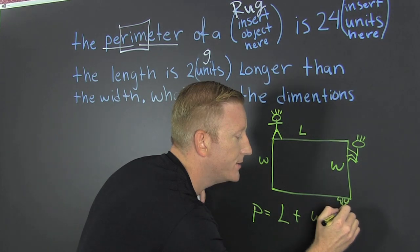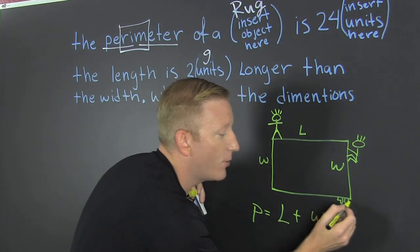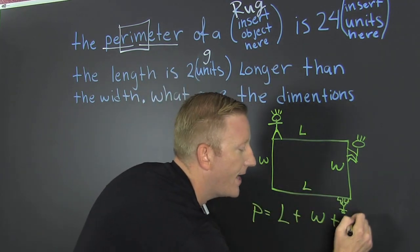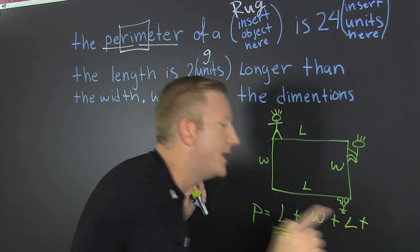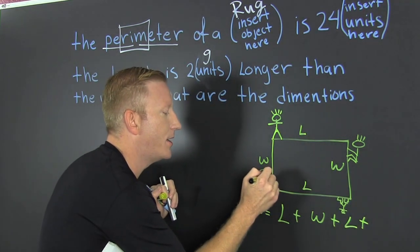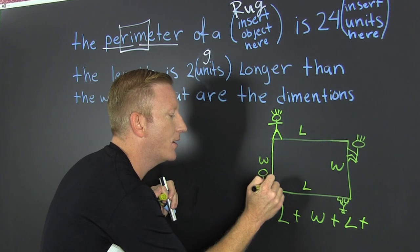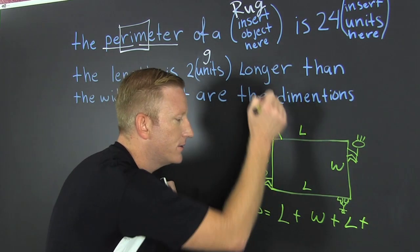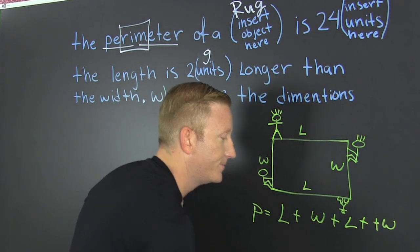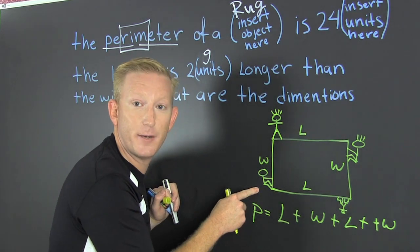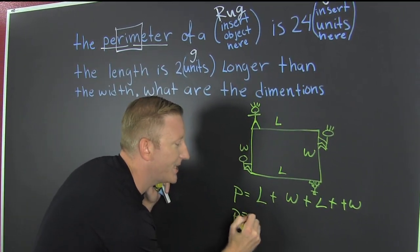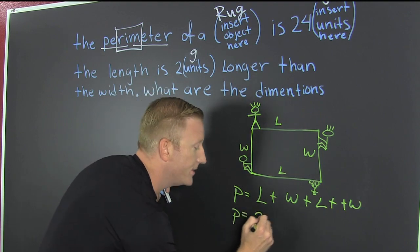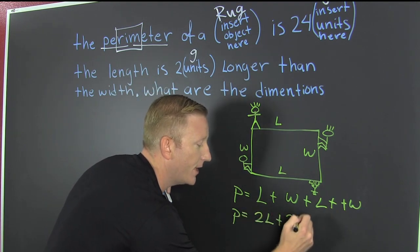And these boots were made for walking. And that's just what they'll do. And I walk this far. Then I would walk L far. For sure, for sure. And then I would turn around and I'd climb on back to my starting point. Going all the way around my rectangle with a W far. So my next step would be to gather, collect, and combine. 2L plus 2W.